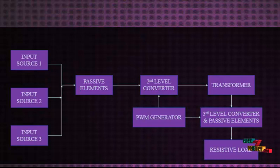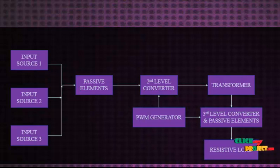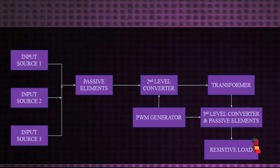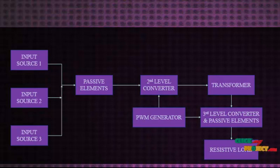The boost inductors connected to the input sources of different voltages are charged when S2 and S3 are turned on respectively. When the related switches S2 and S3 turn off, the energy stored in the inductor is transferred to the load. The overall process has advantages such as high efficiency, constant output voltage, low switching stresses, use of multiple sources, and high conversion efficiency.